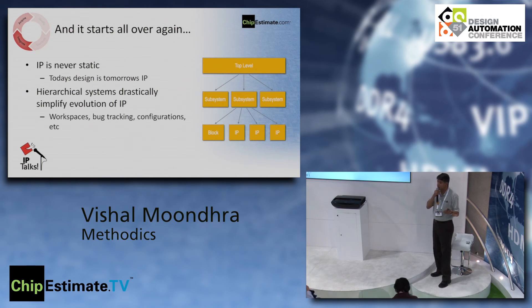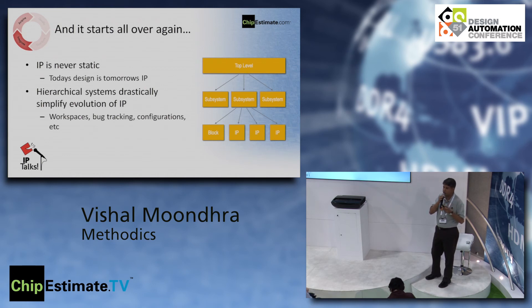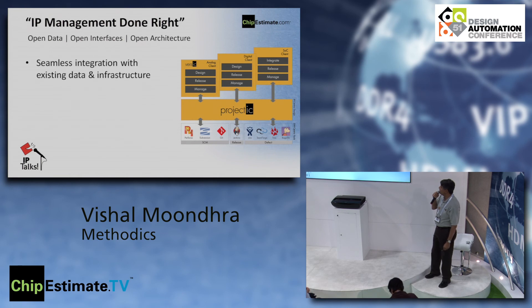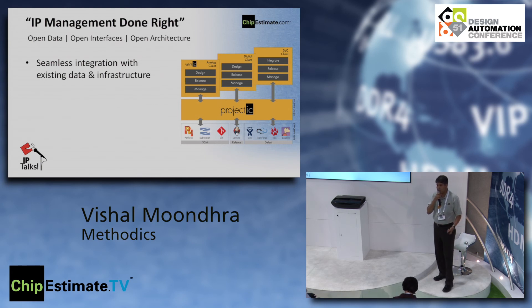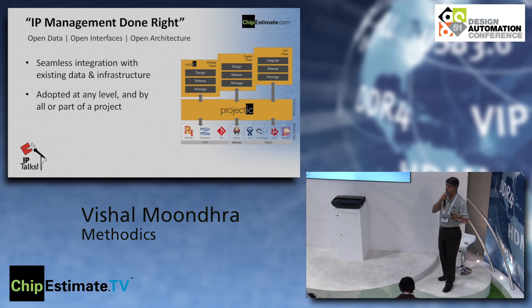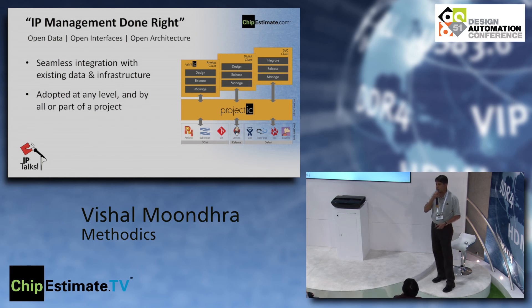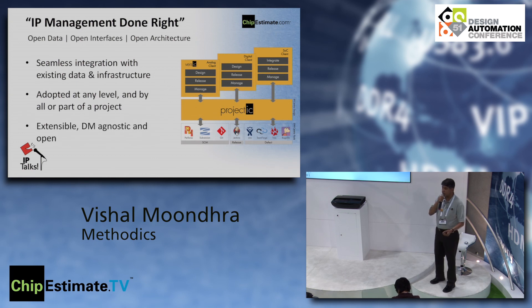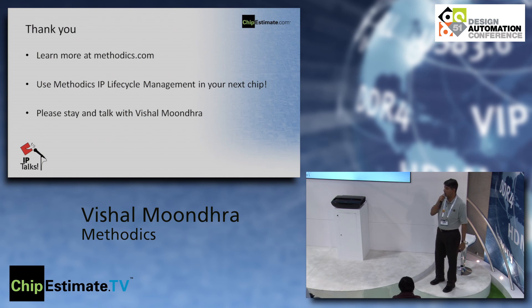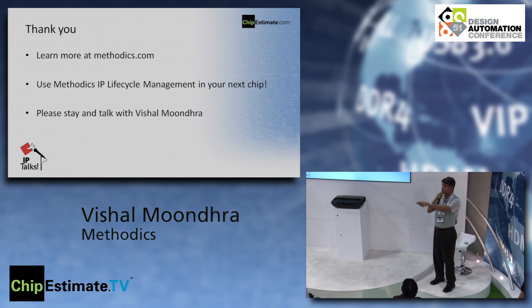Everything you need for an IP — workspace building, bug tracking, configuration management, properties, labels, all associated metadata — comes as a package with the IP. The message I want to leave with is that Project IC's IP management strategy is IP management done right. We believe in open data, open interfaces, and open architecture. We want to seamlessly integrate into your existing system, and you can adopt it at any level — one IP, a subsystem, or the whole enterprise. It's extensible and agnostic to the DM system you're using. Thank you.